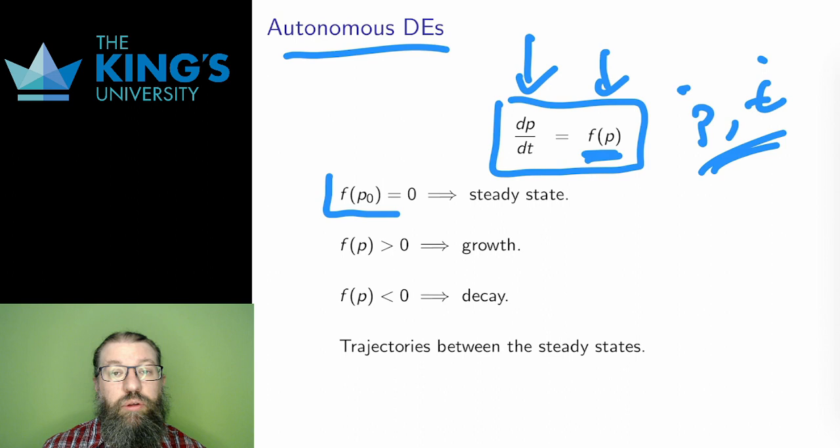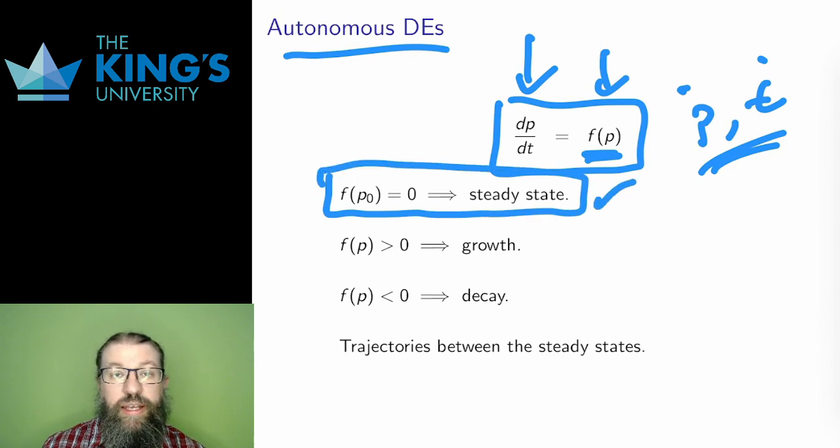So first, I look for values of P where F of P is zero. Such a value, P-naught, is called a steady state of the system. And if F of P equals zero, that means that the left side, the derivative, is also zero. Well, that means that there is no change. These are the values of the population where no growth or decay happens, where the population is constant, steady.